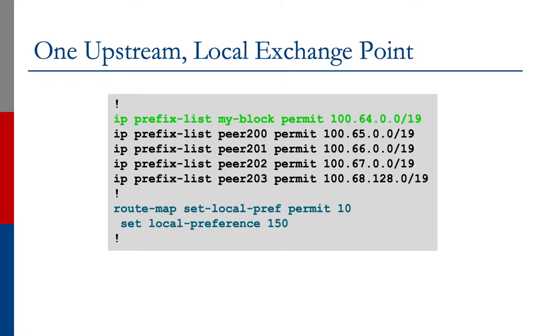Right now we don't strictly need this, because we only hear the default route from the upstream provider, and the prefixes we hear from Exchange Point peers are more specific and therefore better paths. However, in the future we may get a second upstream provider, learn prefixes from two upstreams, and need to apply preferences. So we're introducing the concept of applying local policy to prefixes depending on where they're heard from. Setting local preference 150 for Exchange Point peers means they will have higher priority than prefixes learned from any other source.